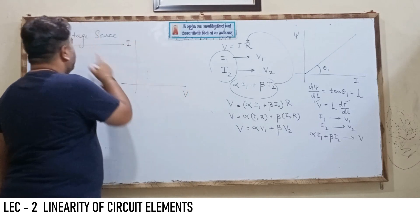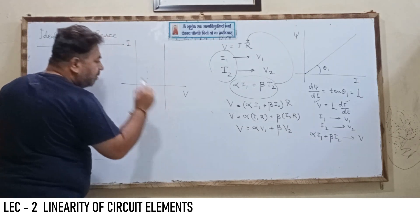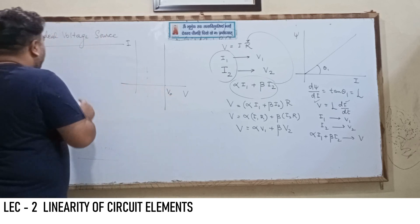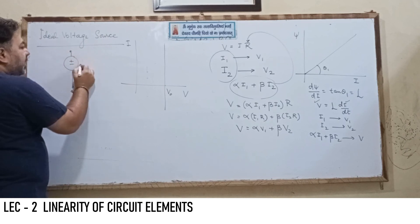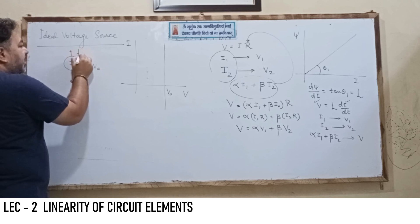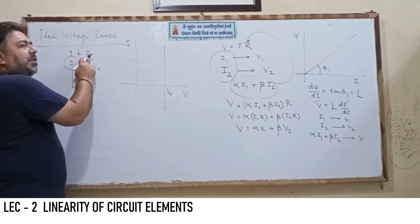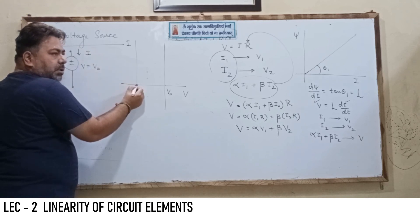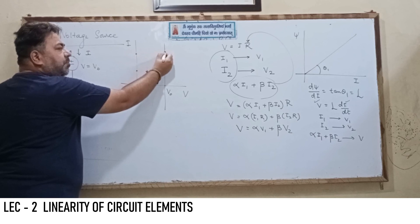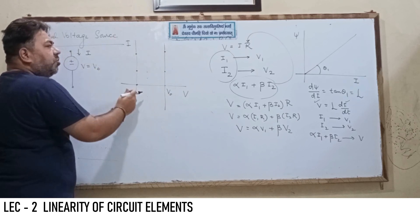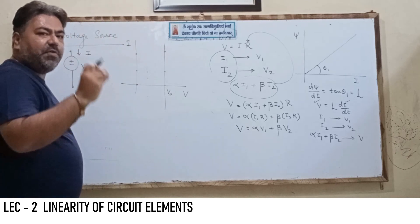For the IV characteristic of this voltage source, voltage is constant at V0 regardless of current. Whether I is 0, 1 ampere, or 10 amperes — the voltage remains V0. This is the characteristic of an ideal voltage source: voltage remains constant throughout the variation of current.